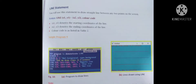The LINE statement is used to draw a straight line between any two points on the screen. The syntax is: LINE (x1, y1) - (x2, y2), color code. x1, y1 denotes the starting coordinates and x2, y2 denotes the ending coordinates of the line. The color code is as listed in Table 2.